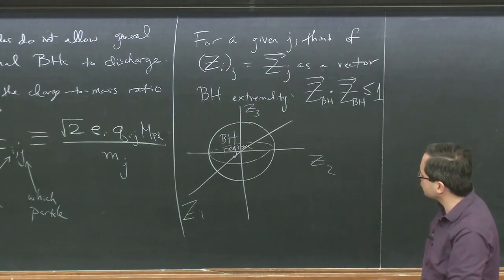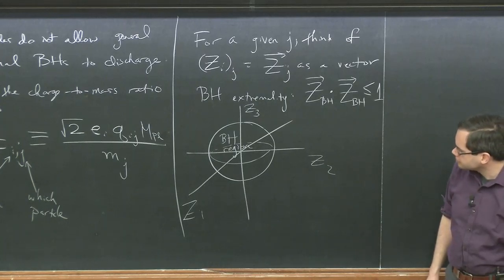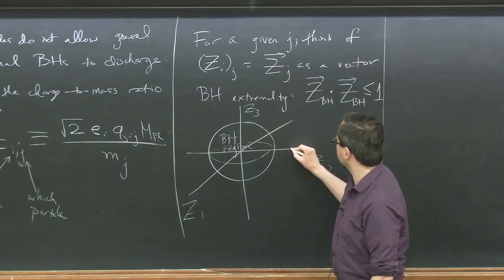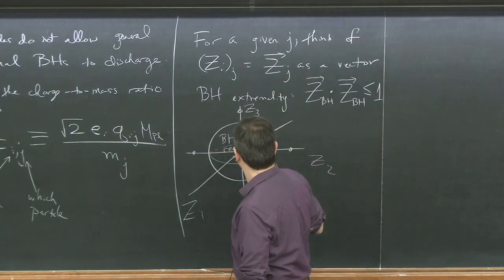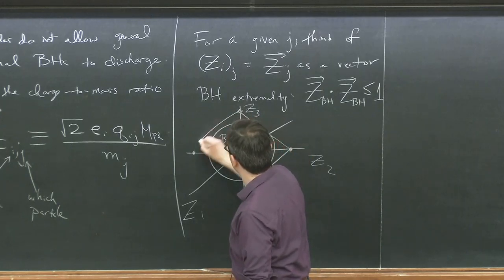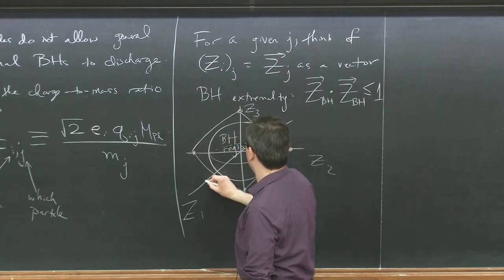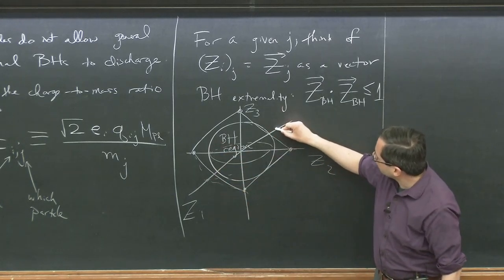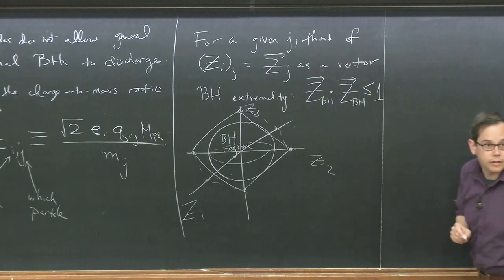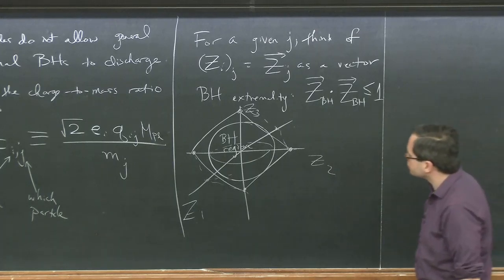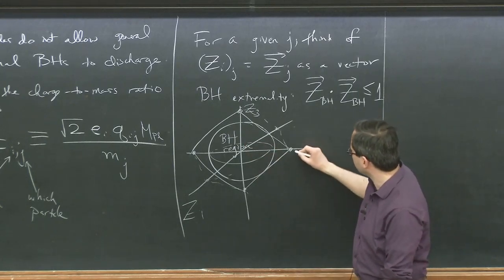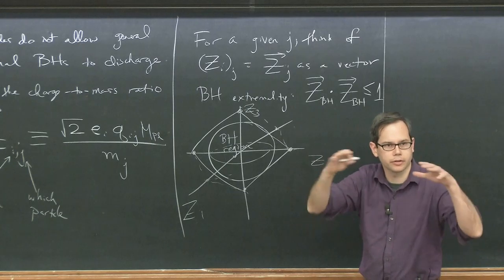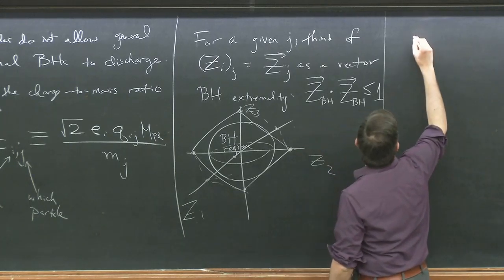What Chung and Raman pointed out is that the condition allowing all black holes to shed their charge is to have some set of charged particles in charge-to-mass space such that their convex hull contains the black hole region. The convex hull means you connect up each of these particles and their antiparticles in such a way as to build a convex space.